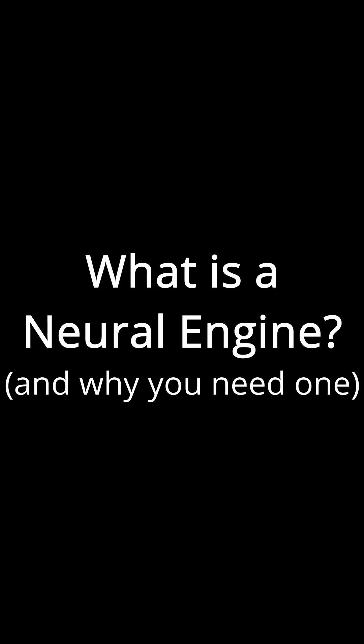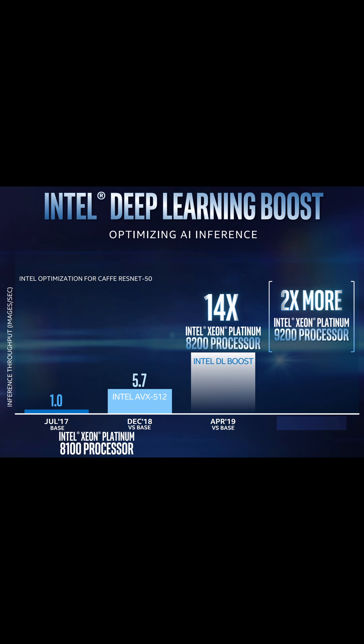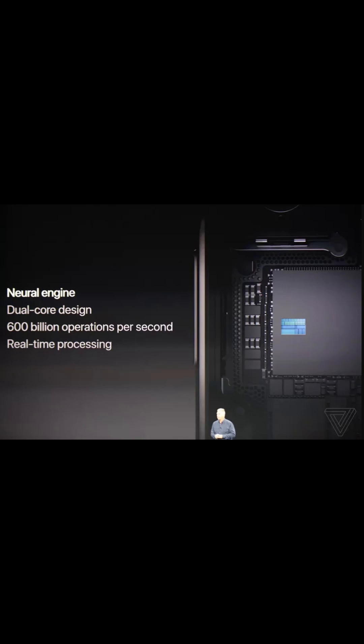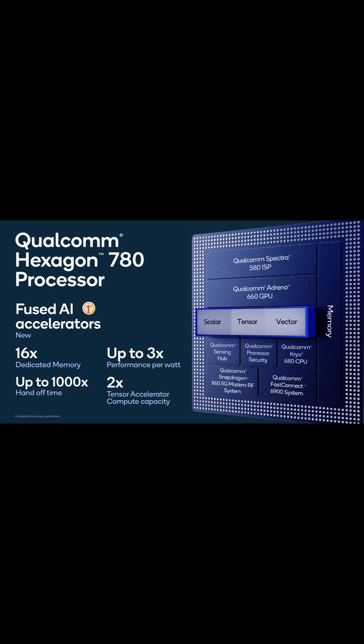It seems like in all the mobile chips we see nowadays, everyone seems to have their own machine learning processor as part of the SoC. The most famous one is Apple's neural engine, even though everyone else has one too. But what are these machine learning processors for and why do you need one?